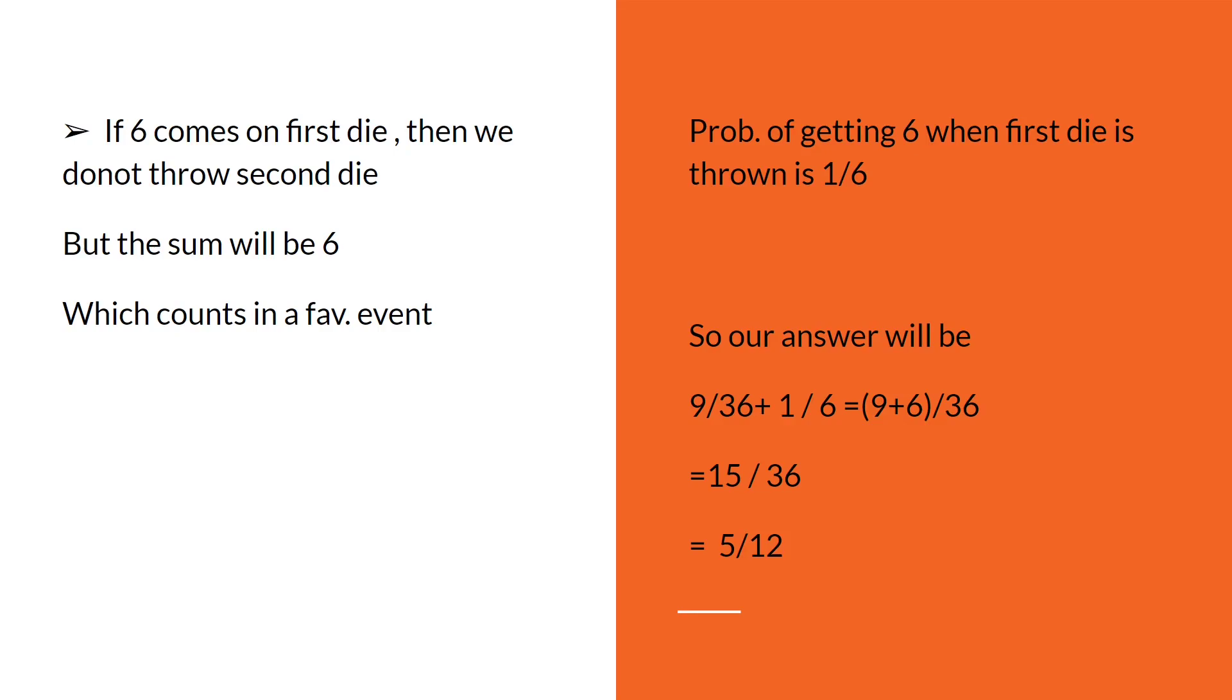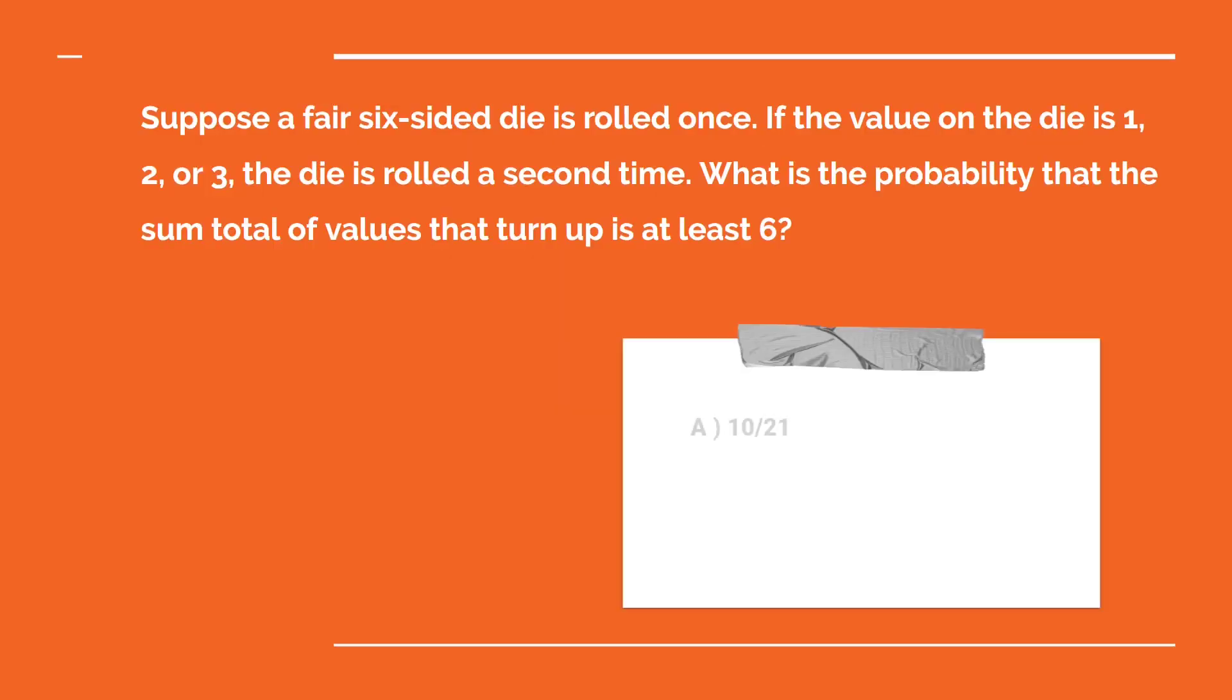If we convert our problem into simple words, to get a sum of at least 6, either get 6 on the first die, or get a sum on first and second die which is at least 6. That's why it's additive. If we solve it, it will give us 15 by 36, which is 5 by 12. So our answer is 5 by 12.